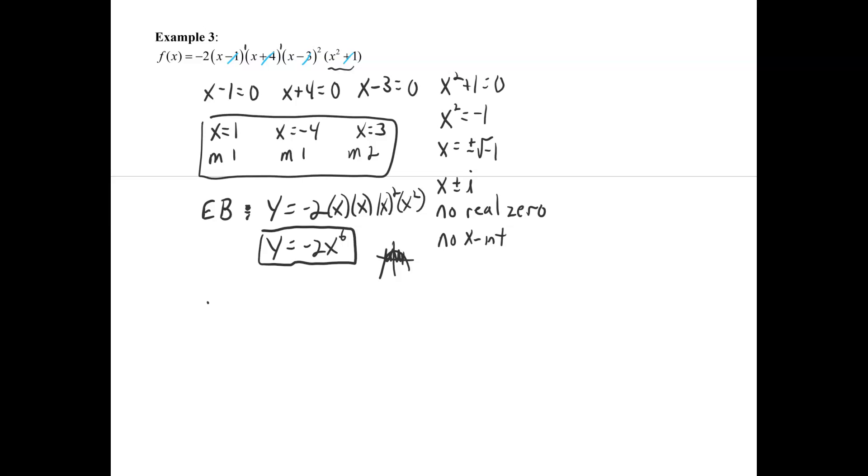And the last thing would be the y-intercept. If we find f of 0, we're going to get the y-intercept. So that's going to be negative 2 times 0 minus 1, so that's negative 1, times 0 plus 4, so that's going to be 4, times 0 minus 3 squared, so minus 3 squared, times 0 plus 1, 0 squared plus 1, which is still just 1. All right, so what do we get here? That's 9 times 4 is 36, times, these are 2, so 36 times 2 is 72. So there's the y-intercept.